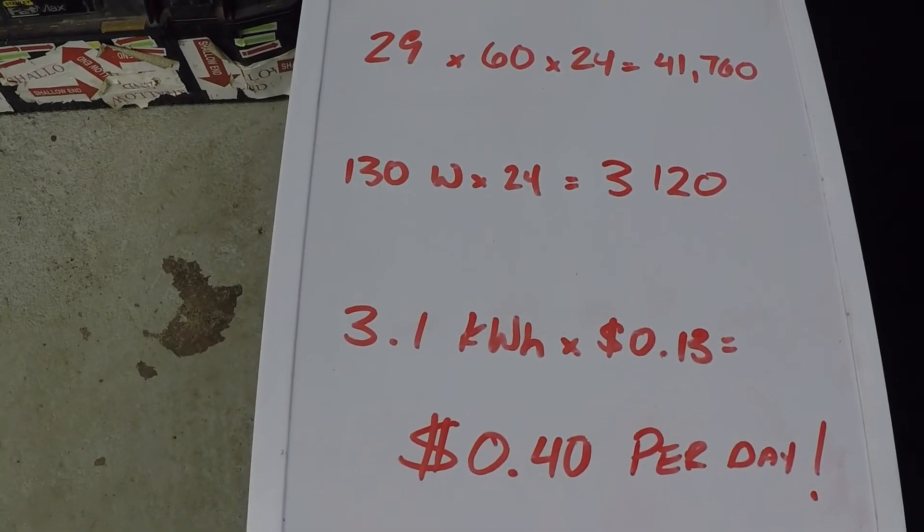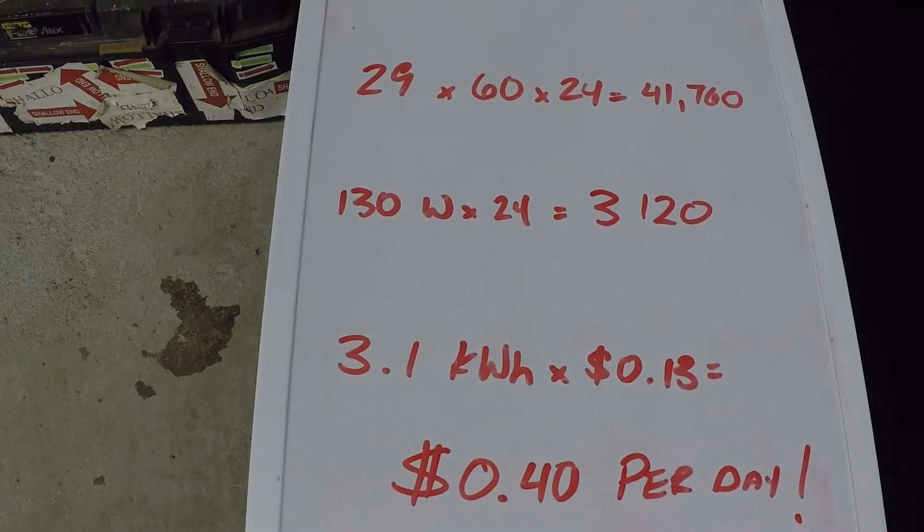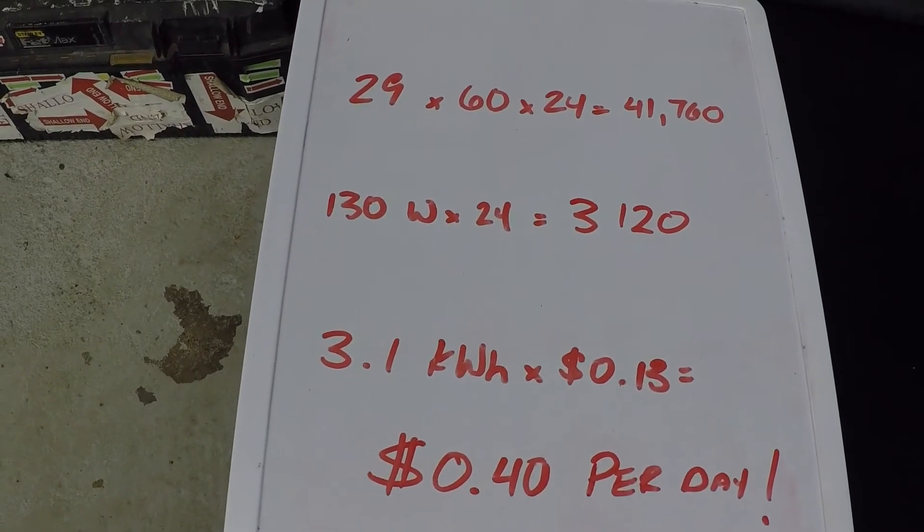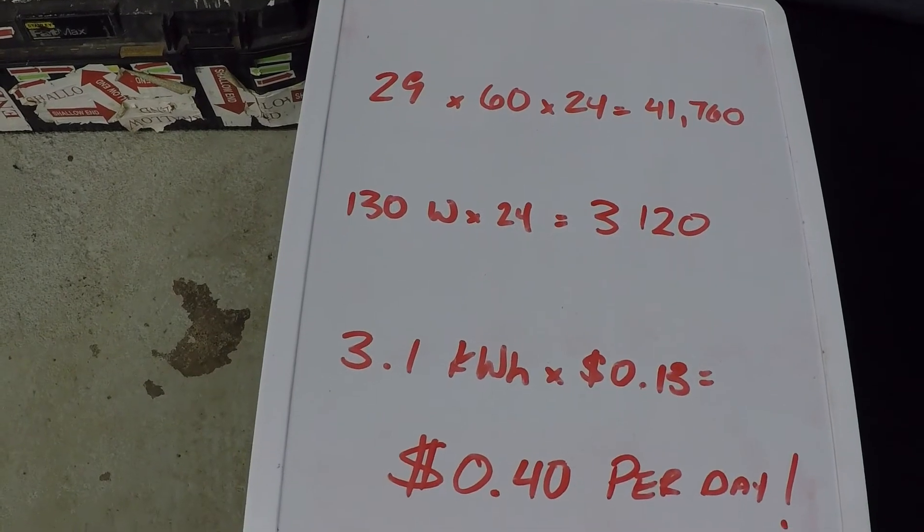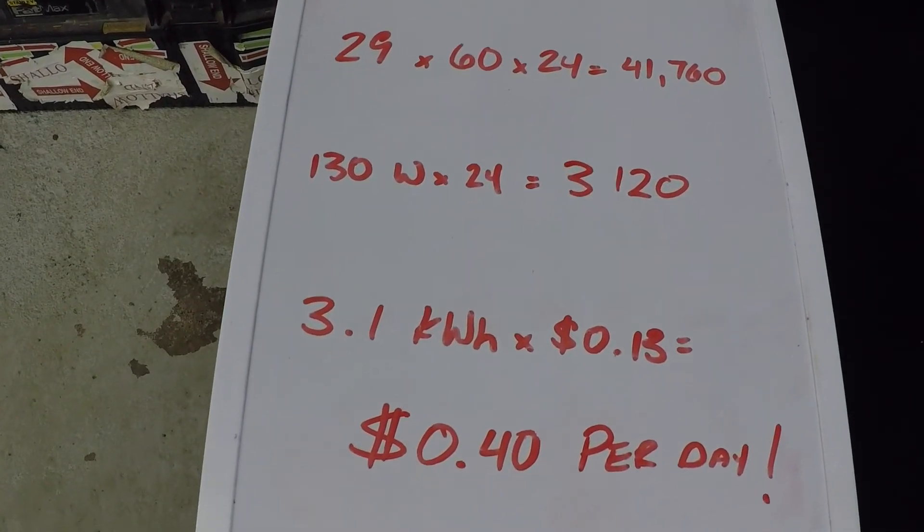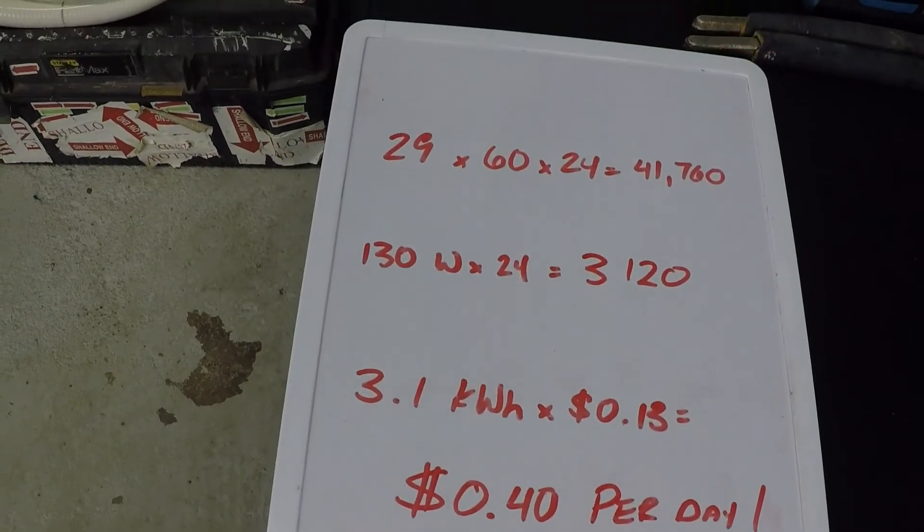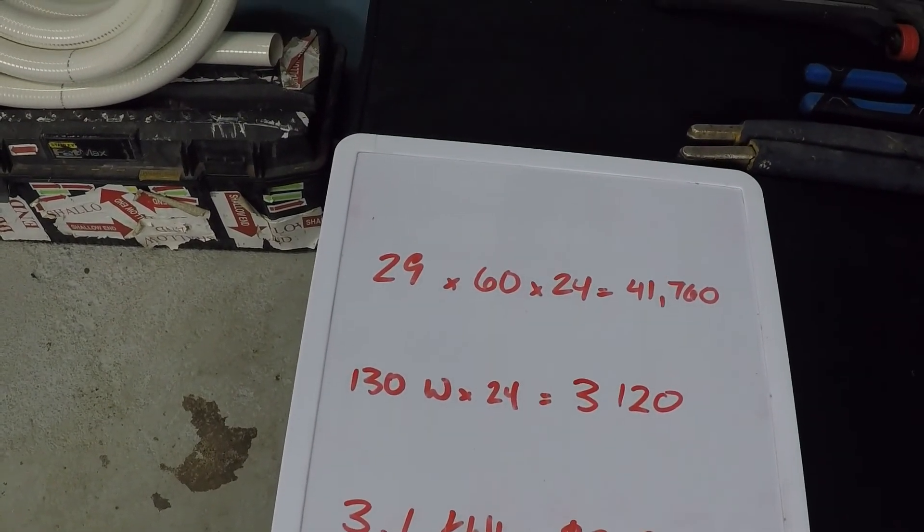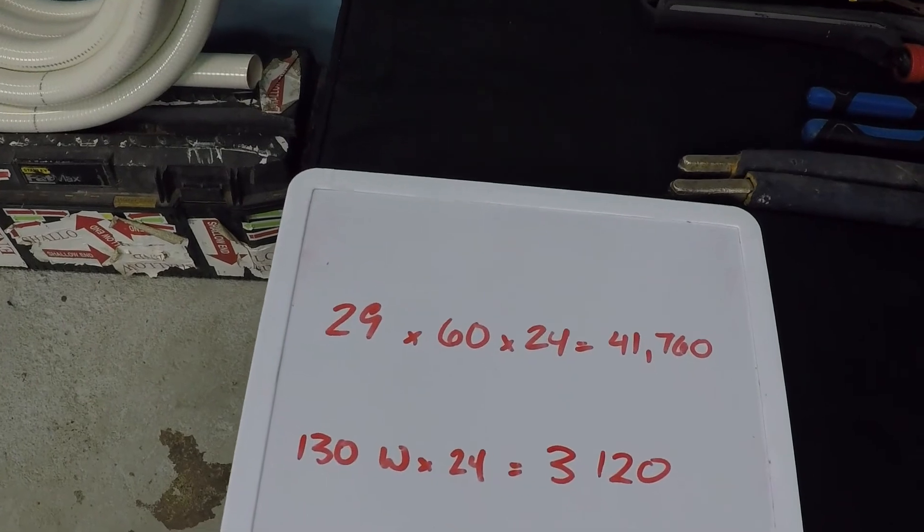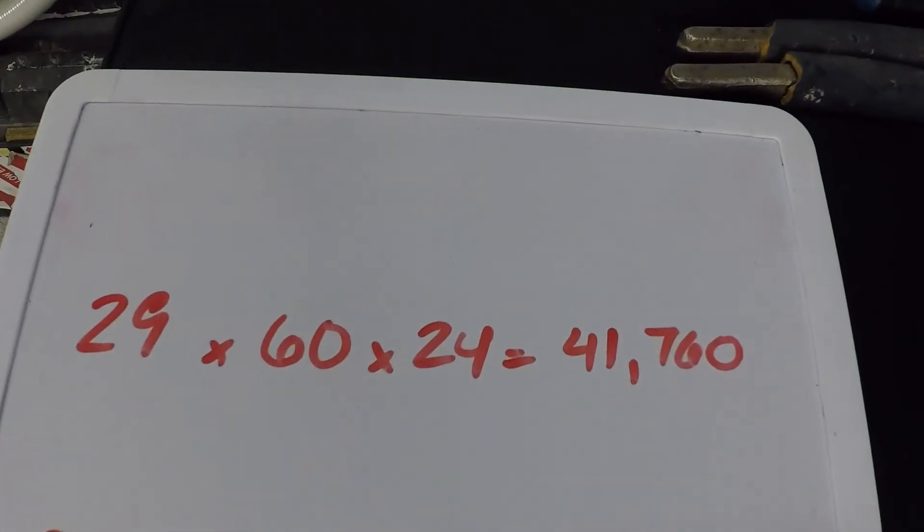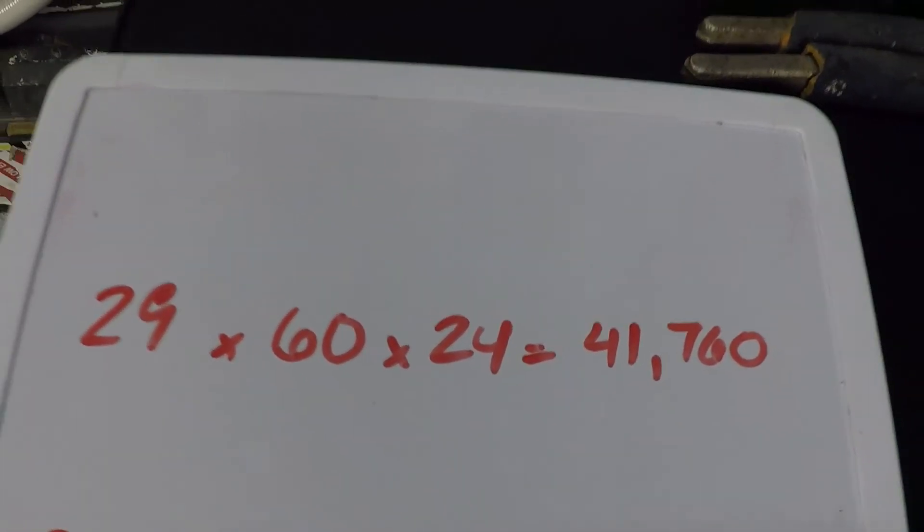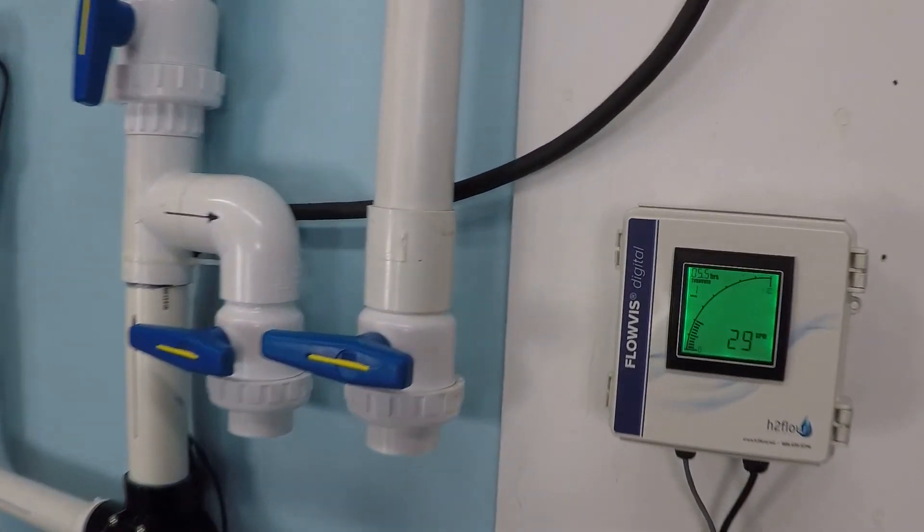And a kilowatt hour is how you pay for your power. And the nationwide average is about 13 cents per kilowatt hour. So at 3.1 kilowatt hours times the national average, you're looking at 40 cents per day in order to pump over 41,000, almost 42,000 gallons of water through your filter. That's an incredible amount of flow for not all that much power consumption.